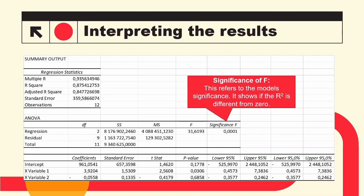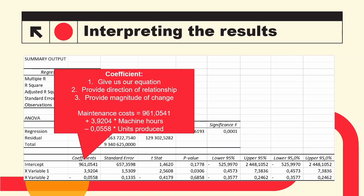We now move on to our variable statistics. First, the coefficients give us our regression equation and also indicate the direction of the relationship — positive means they move in the same direction, negative means they move in opposite directions — as well as the magnitude of change for a unit change of the independent variable. We see that x1, machine hours, has a positive relationship with maintenance costs, while x2, units produced, has a negative relationship. The magnitude of change from machine hours is much greater than that of units produced.